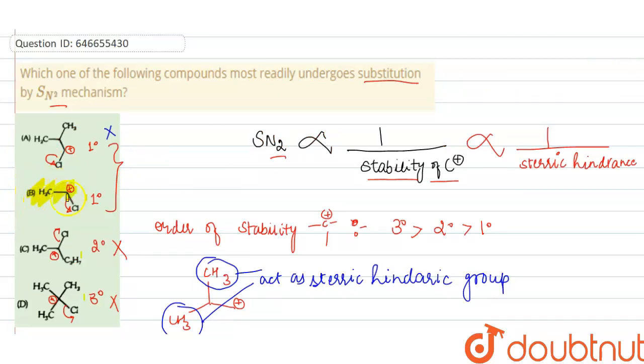So here, your B option is the correct option because it has least hindrance and is primary carbocation. This is your correct answer.